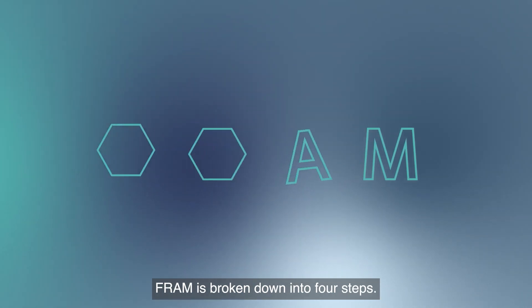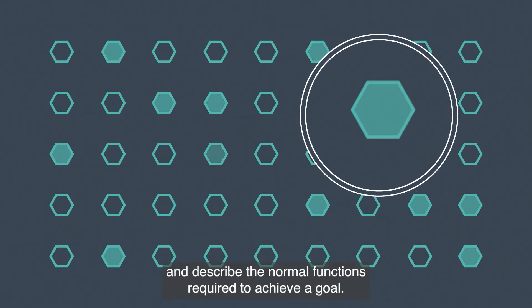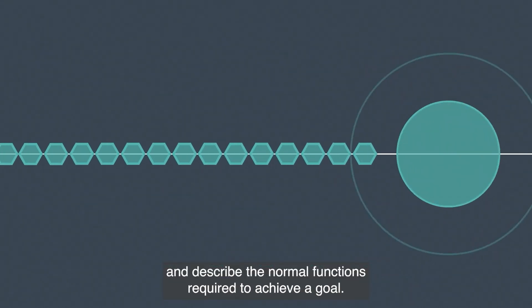FRAM is broken down into four steps. Firstly, it asks us to identify and describe the normal functions required to achieve a goal.